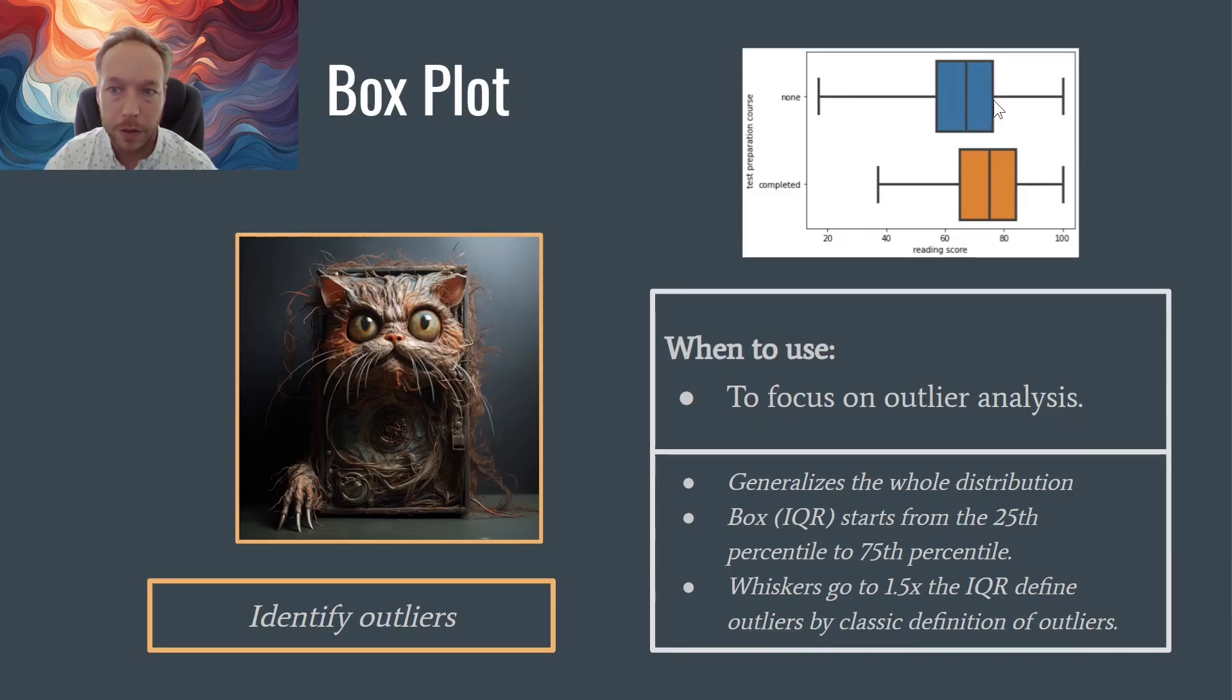This is the interquartile range and using the IQR to define outliers. By default, this really helps you just focus on the outliers. You're really kind of generalizing the rest of the plot to focus on that.